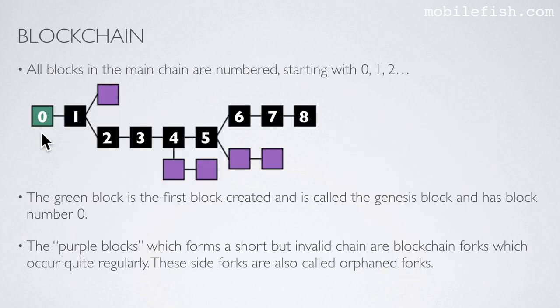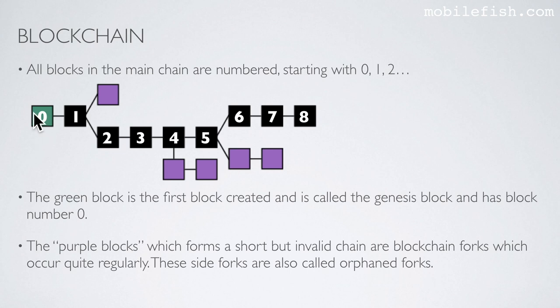All blocks in the main chain are numbered starting with 0, 1, 2, etc. So this is the main chain and each block in this chain is numbered. The green block is the first block created and is called the Genesis block and has block number 0.